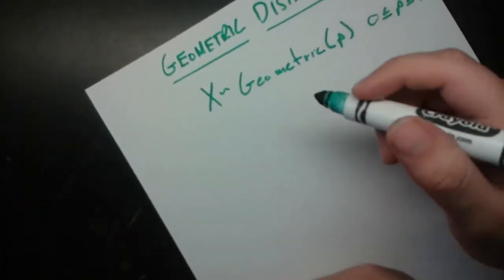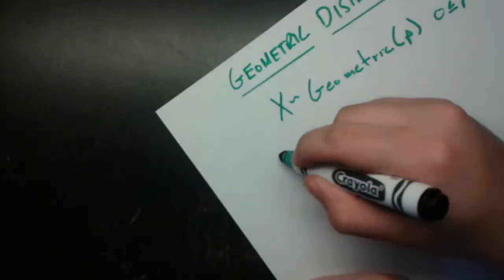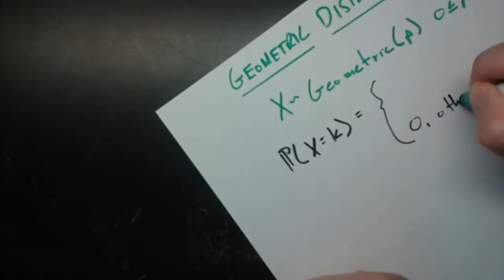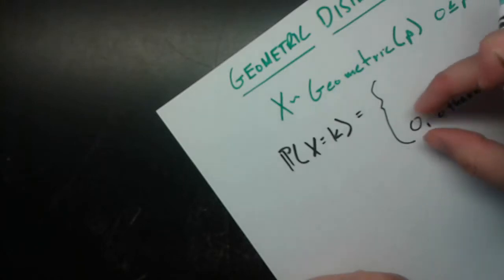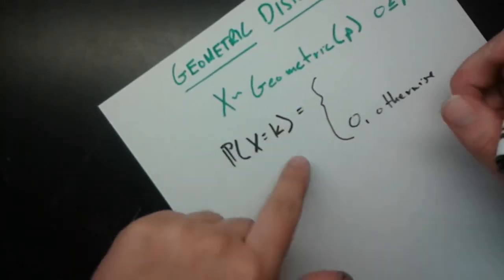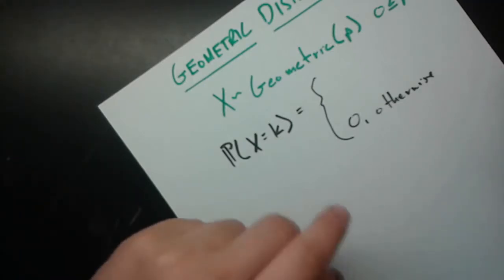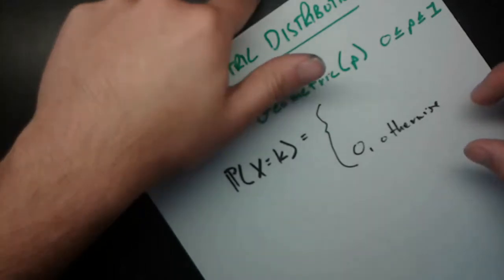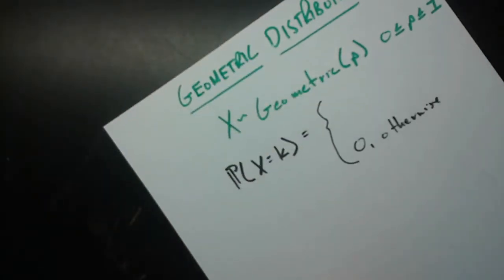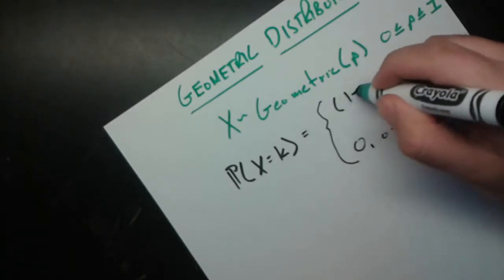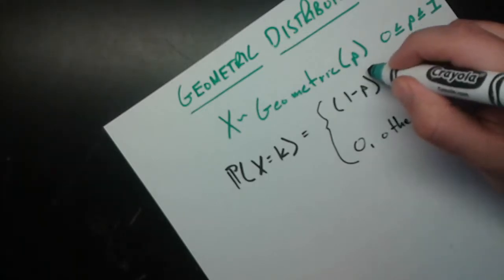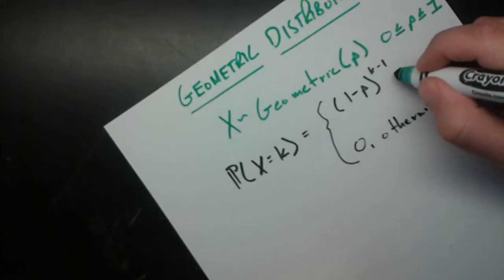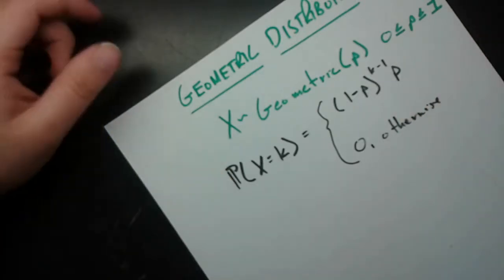Now let's find the probability that X equals some k. When k equals 4, that means we need three failures in a row — red car, red car, red car — and then on the fourth trial a white car. Since all trials are independent, the probability of three failures is (1 minus p) to the third power, and in general (1 minus p) to the (k minus 1), multiplied by the probability of success p. That's our PMF.